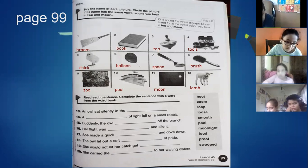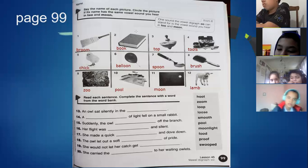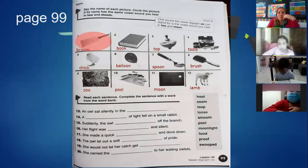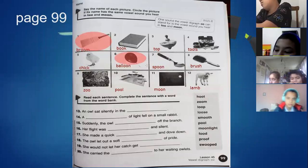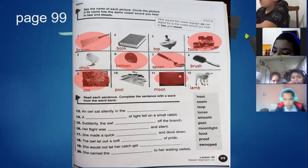Now second instruction. Circle the picture if its name has the same vowel sound you hear in two and moon. So which one do we have to circle? Broom. Circle. Book? No, because book has a different sound. This one. This topic is not easy. Balloon. Tools. Moon and pool. Just book is out of this category.